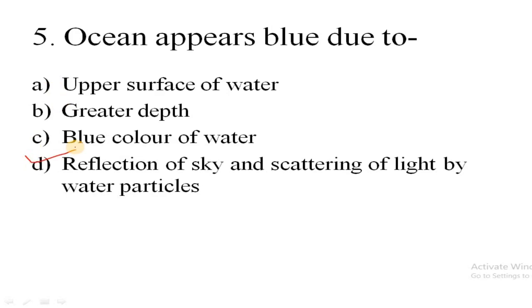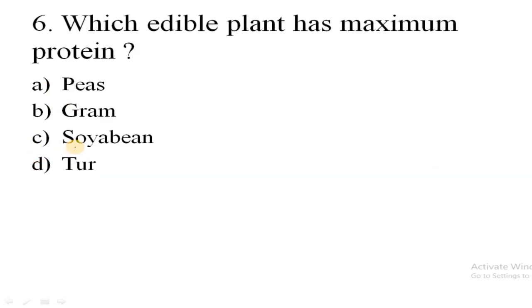Question number six is, which edible plant has maximum protein? A pea, B gram, C soybean, D potato. The correct answer is C. It's a very simple question - soybeans have the highest protein content.